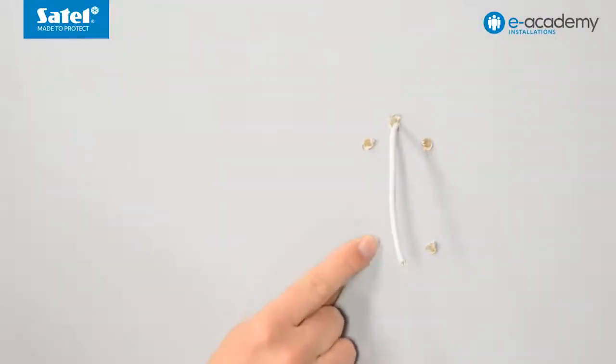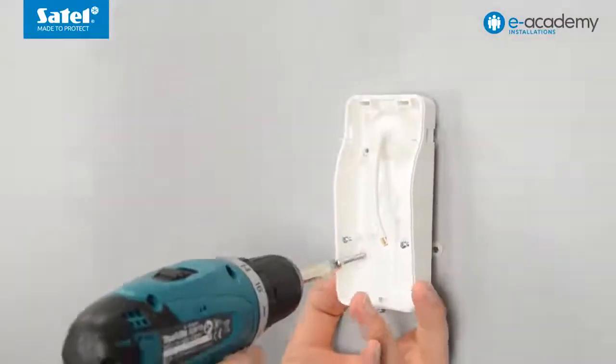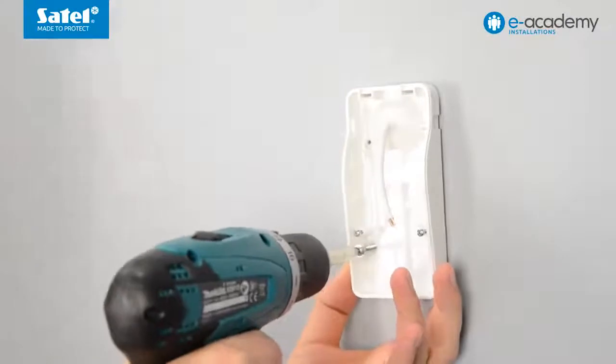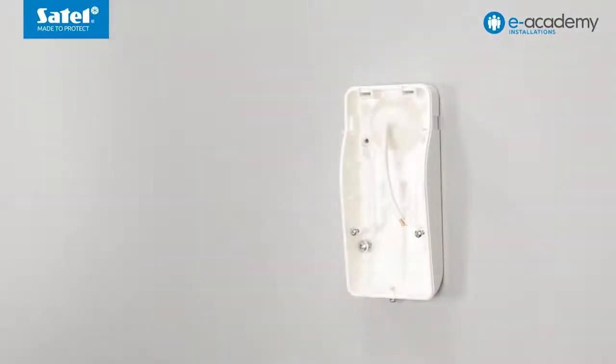Insert suitable plugs into the drilled holes. Secure the enclosure base to the wall using the drill driver and screws.